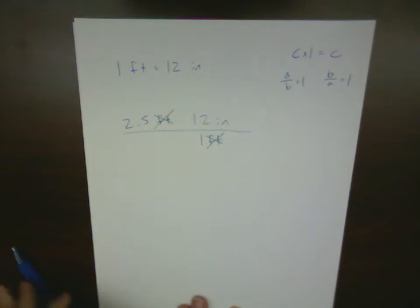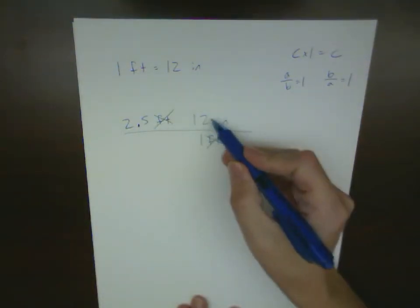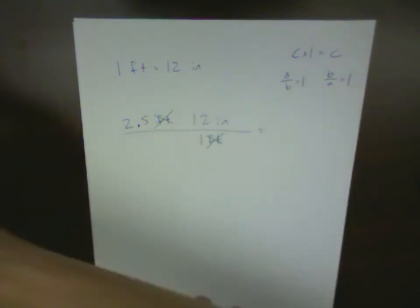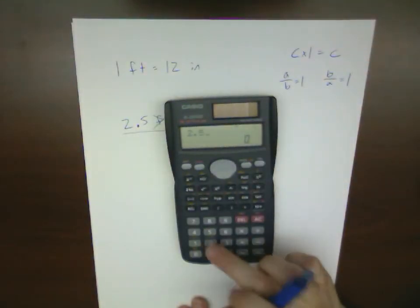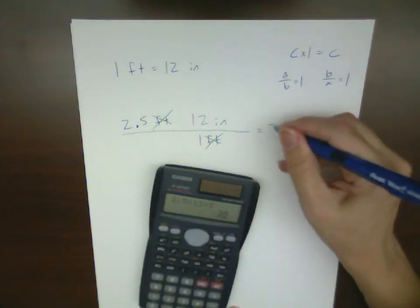What I'm left with then is 2.5 feet times 12 divided by 1 with units of inches. Now, if you multiply this out, 2.5 times 12 divided by 1, that gives you an answer of 30 inches.